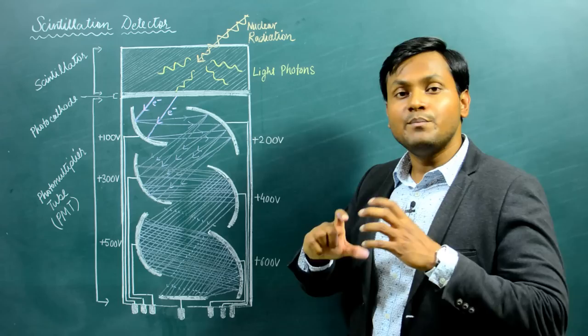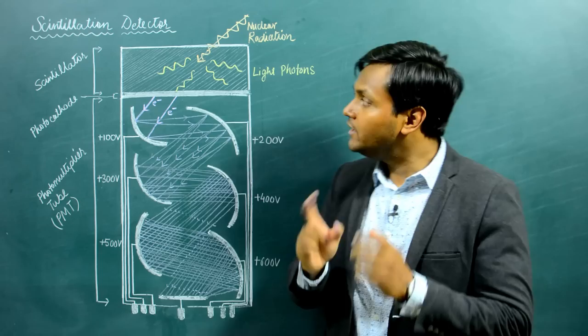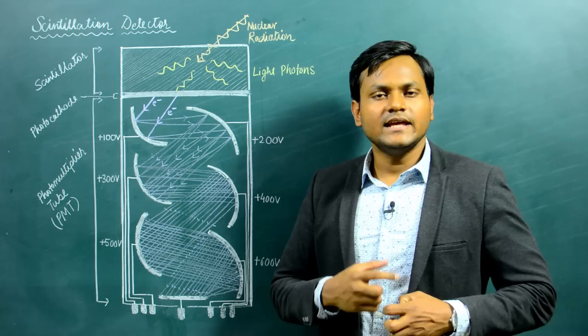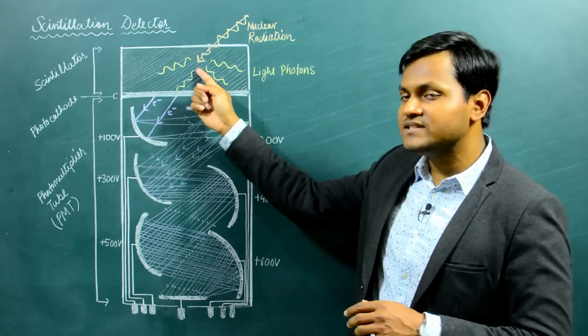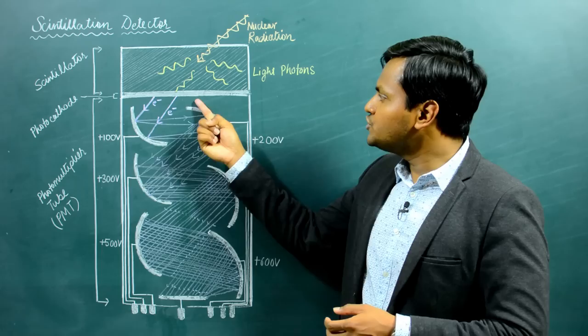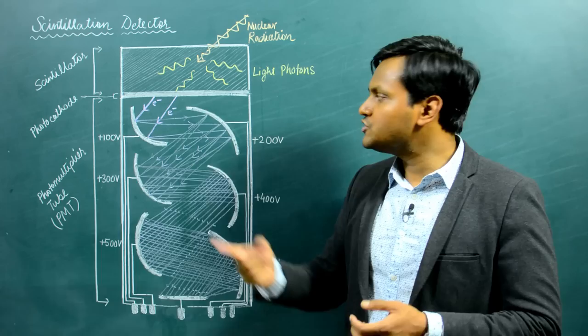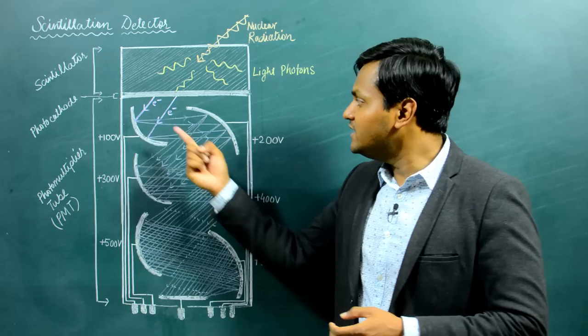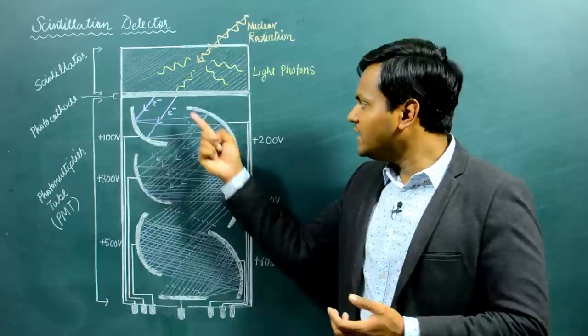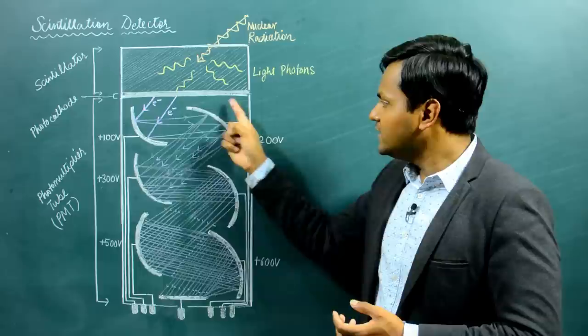By studying the current pulse, you can get an idea about the energy of the nuclear particle that entered the material medium. A scintillation detector is very effective in telling us about the energy of an incident particle as well as the intensity of incident particles. In summary: an incident nuclear particle creates scintillation inside the scintillating material, emitting photons. These photons hit the photo cathode causing photoelectric emission of photo electrons, which cascade through dinodes at increasing potentials, multiplying at each stage, until a measurable signal current pulse is observed at the anode.